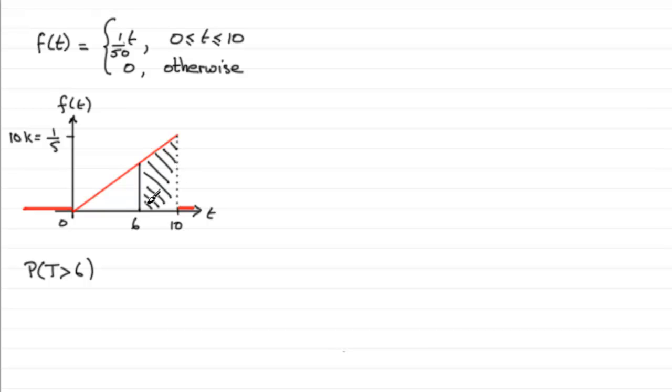We could work out that area as the area of the trapezium, or as I would prefer to do it, as the area of the whole triangle minus the area of the white triangle. We know the area of the whole triangle is going to be 1 because that's the area under the graph from 0 to 10. So this equals 1 minus the area of this triangle here.